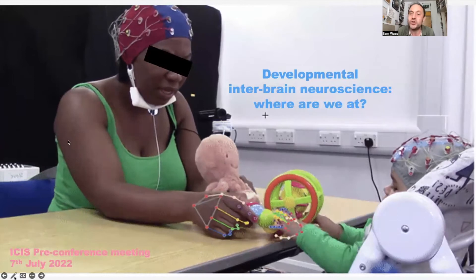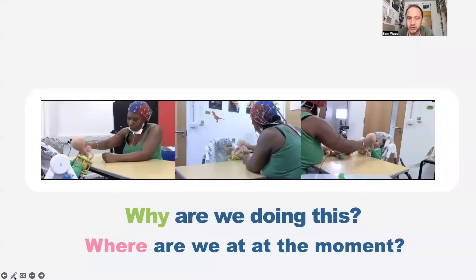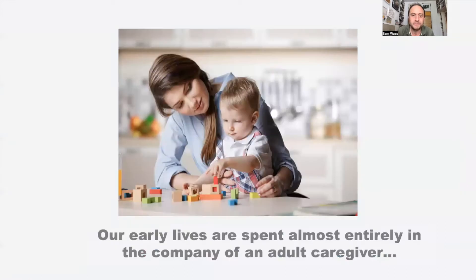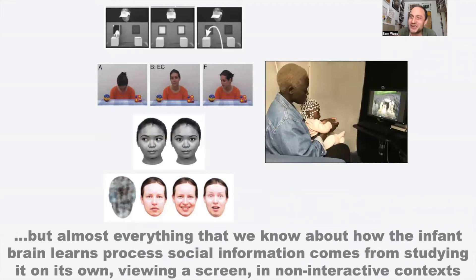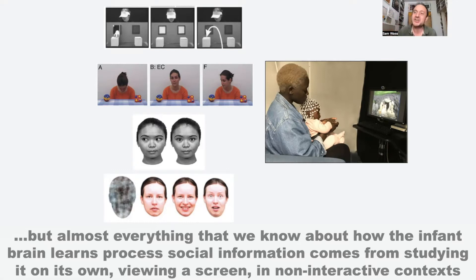So I just did a short overview of where we're at to start us off — why are we doing this, where are we at the moment. We know that we spend our early lives almost entirely in the company of an adult caregiver, and yet almost everything we know about how the infant brain learns to process social information comes from studying it on its own, viewing a screen in a non-interactive context.